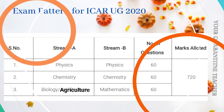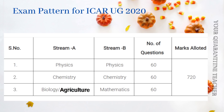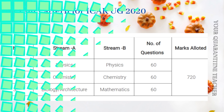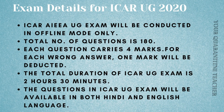The number of questions is 60 for Chemistry and 60 for Biology. The total marks are 720. For ICAR UG 2020, it will be an offline exam. The total number of questions is 180, and each question carries 4 marks.